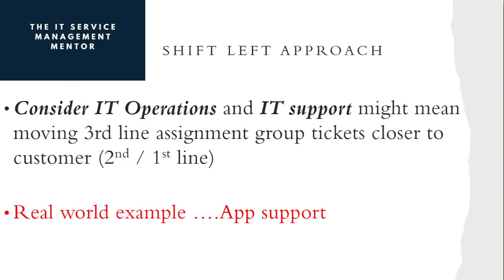It's cheaper and less disruptive to customers. If you fix an issue earlier on rather than waiting for it to be in production, it's clearly less disruptive and cheaper because you're not having to do it twice. In the context of IT operations and IT support, it might mean moving a third line assignment group ticket back to your second line or first line function. As a real-world example, I looked at tickets going into a third line subject matter expert support assignment group for applications, and when I spoke to individuals in that group, they said some of these tickets aren't really third line — they're fairly straightforward.